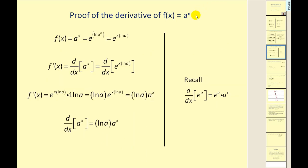Now what if the base isn't e? From our properties, we can rewrite a to the x as e to the power of x times natural log a. In this form, we apply the chain rule to the derivative of e to the u. The derivative of u is just natural log a, which gives us natural log a times a to the x when a does not equal e.